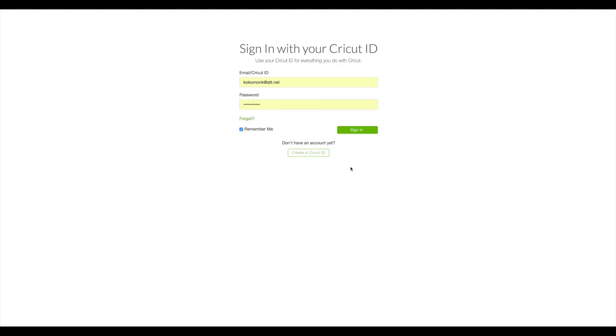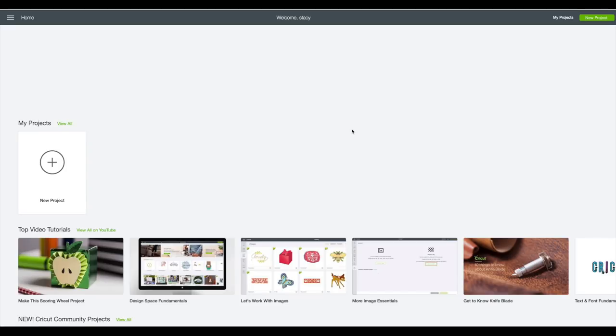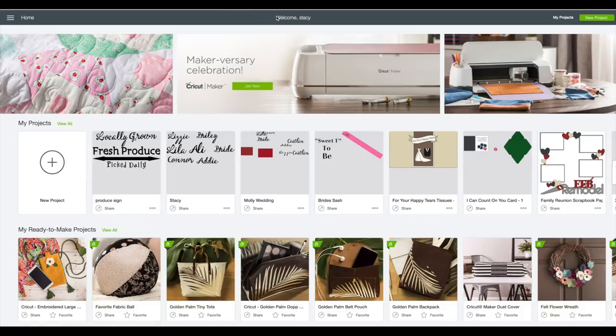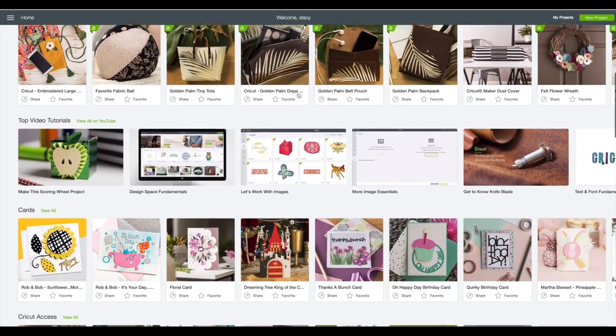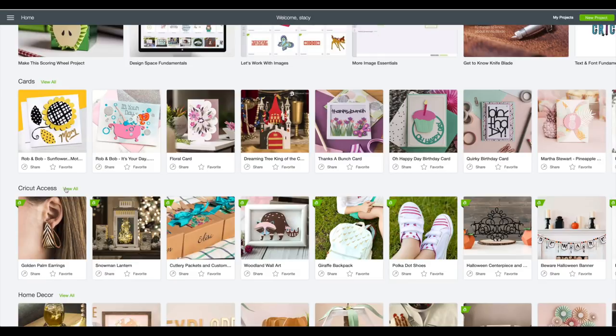At the computer you want to go to design.cricut.com. You will see this screen. Enter in your email and your password. Click on sign in. When you see your name at the very top, this verifies that you were logged in. On this screen we are going to scroll down until we get to Cricut Access. Click on view all.